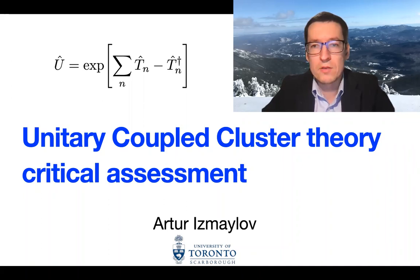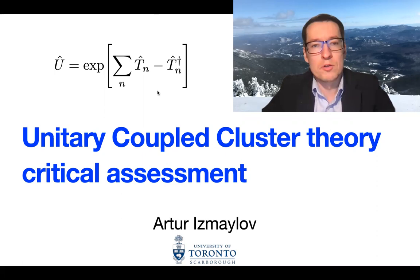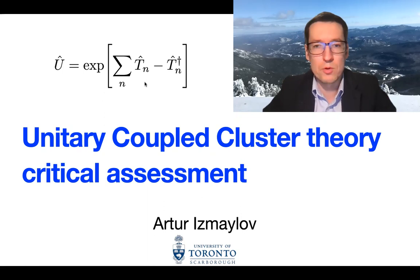Unitary coupled cluster theory is the one that usually comes to mind for anyone who wants to do electronic structure on a quantum computer. It's a simple-looking expression, but not very simply implementable on a quantum computer, because it has the exponent of a relatively complicated anti-Hermitian operator. In order to put it on a quantum computer, you need to present it as a product or sequence of simple gates, and that is not very simple. In this video, I would like to talk about some subtleties related to breaking down this expression into pieces implementable on a quantum computer, because those manipulations sometimes lead to theories that are not in principle exact.